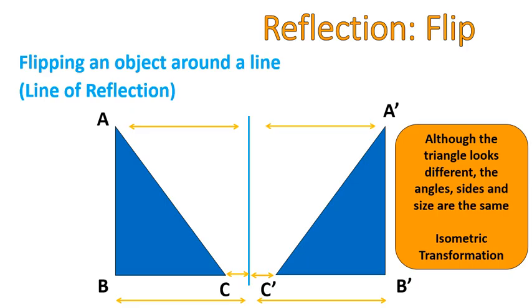Again, the triangle looks different. However, the angles, the side measurements, and the size of this figure are the same. So this is classified as an isometric transformation.